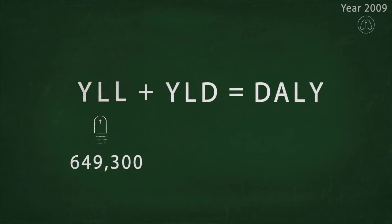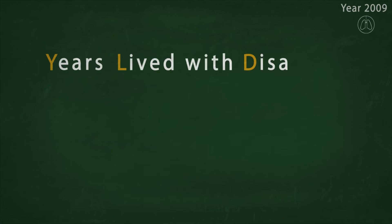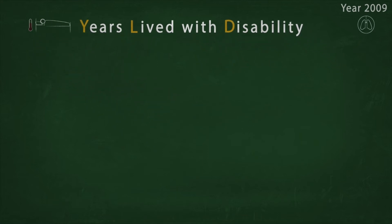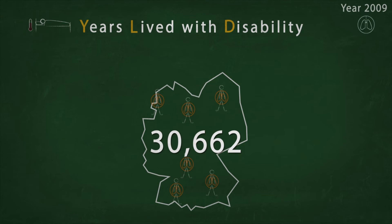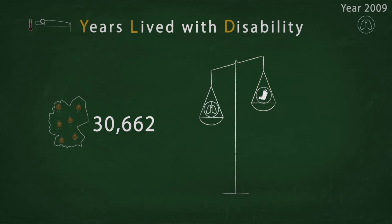Let's go back to the formula and look at the second part of the DALYs — the YLDs. These stand for years lived with disability. As we do not live in full health throughout our entire lives, the YLDs represent the years lived with health restrictions. First, we need to know how many people suffered from lung cancer in the year 2009. In Germany, this was 30,662 people. Unlike mortality, the years lived with a disease are not counted as a full loss of life years, because diseases vary in their impact on health. Therefore, the years lived with a disease are multiplied by a factor that represents the severity of that disease.